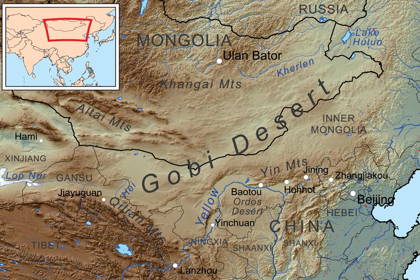The most common vegetation in the Gobi Desert are shrubs adapted to drought. These shrubs include gray sparrow's saltwort, gray sagebrush, and low grasses such as needle grass and bridlegrass. Due to livestock grazing, the amount of shrubs in the desert has decreased.